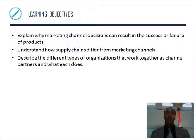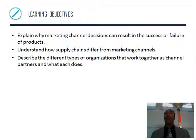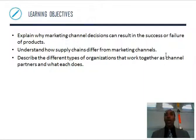Our learning objectives are: explain why marketing channel decisions can result in the success or failure of products. If you don't know how your product should be marketed or where things about it should be communicated, you're going to have a problem in the sales aspect. But if you get it right — online is the best place for this, or brick and mortar is the best place for that — then you have success.